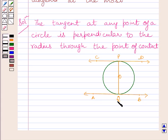Now we know tangent at any point of a circle is perpendicular to the radius through the point of contact. Now OQ is the radius, AB is the tangent and Q is the point of contact here.